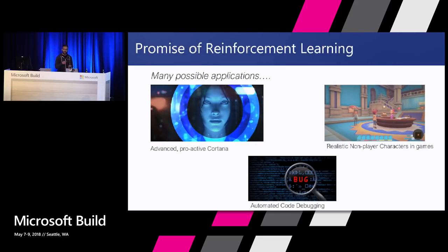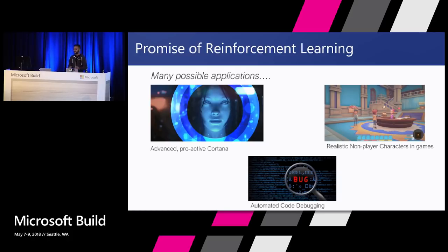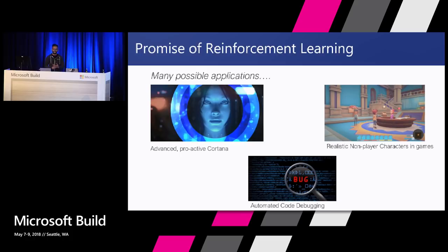For a couple of examples: we can make an advanced proactive Cortana that learns from its environment by interacting with the user — you can really customize it. It can get reward back from the user either by completing a task successfully or through verbal commands the user might give back to the agent. You can also build really realistic NPCs or non-player characters in games where these characters have the intelligence to adapt to the environment based on the reward they're getting back. And finally, something more relevant to this audience — you can have automated code debugging.